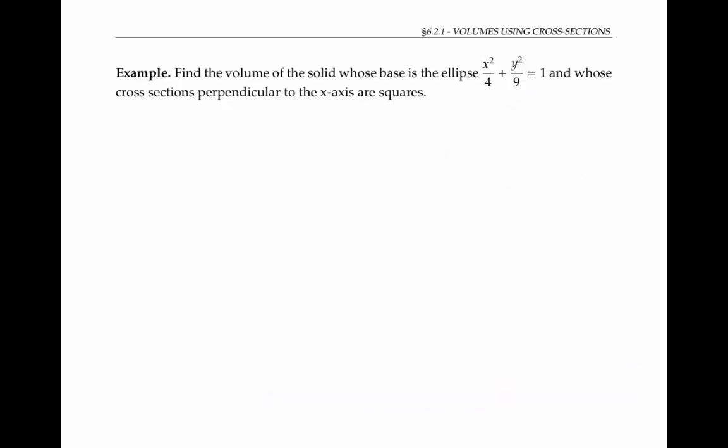As an example, let's try to find the volume of a solid whose base is an ellipse given by this equation, and whose cross sections perpendicular to the x-axis are squares. First, let me graph the base. It looks like an ellipse that's thinner in the x direction than in the y direction, so something like this.